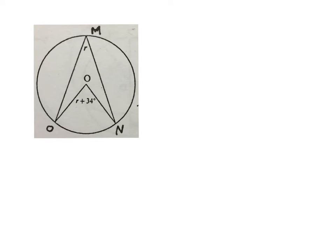Right. The last question of this video. They gave us a circle again. O is the center. It's given. They tell us this angle here is R plus 34 degrees. That angle over there is R. And we have M, O and N on the circumference. We have to solve for small r.